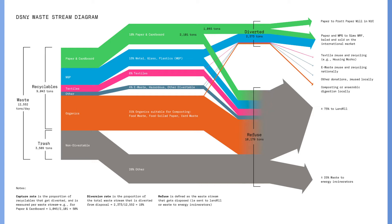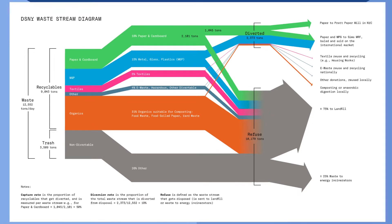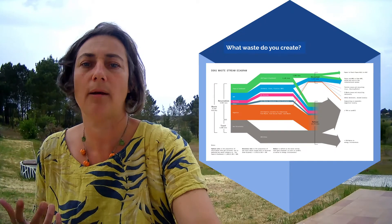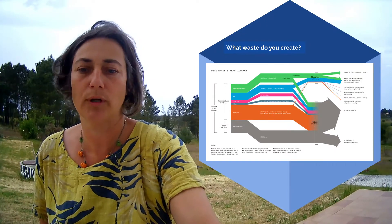This graphic was taken from the state of New York, where they really interrogated the different waste streams coming out from New York City. They looked at what is being recycled and what is not being recycled, so they can start to understand where they need to improve their waste collection practices. This can be applied to an organisation — you should really understand what kind of waste is coming out and where it's coming from within your organisation.